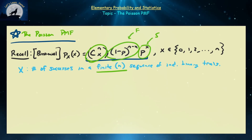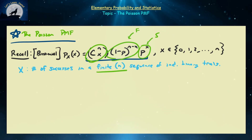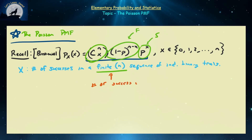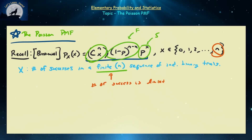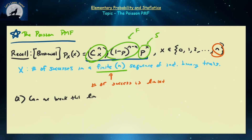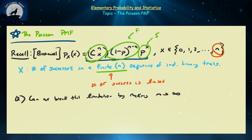One important thing about binomial: suppose you want five successes but are only given six trials — that's almost impossible if the probability of success is extremely low. The number of successes is limited by n. So a natural question is: suppose I want five successes but want to try as many times as I want. Can we break this limitation by making n go to infinity?